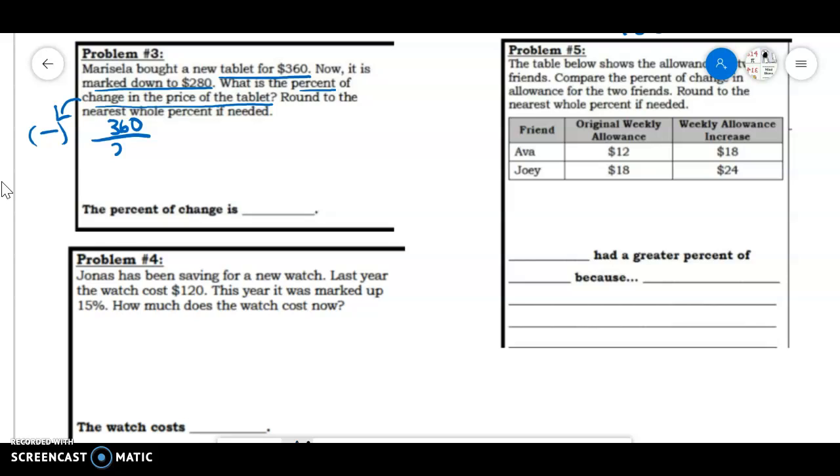So $360 minus $280. So when we do that, we get $80 difference, but we need that as a percent. So 80 out of our original, remember, it's always difference over original. Whenever we're doing this, it's equal to 100.